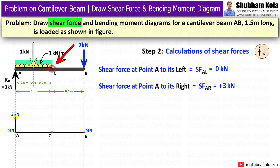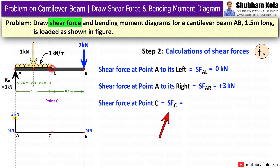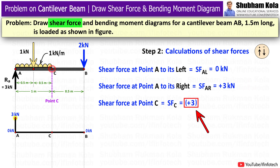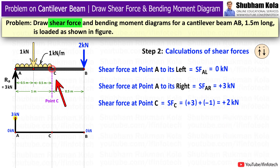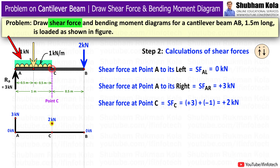Point C is the end point of the UDL. Taking the section to point C: I carry forward the previous shear force value of 3kN from point A right. To the left of point C, there is a UDL of 1kN per meter, which was converted to a point load of 1kN acting downward. As per sign convention, downward force is negative, so I add minus 1kN. The shear force at point C equals 2kN. Since it is positive, I mark it above the reference line. As the load type is UDL, I indicate this section in the shear force diagram with an inclined line.